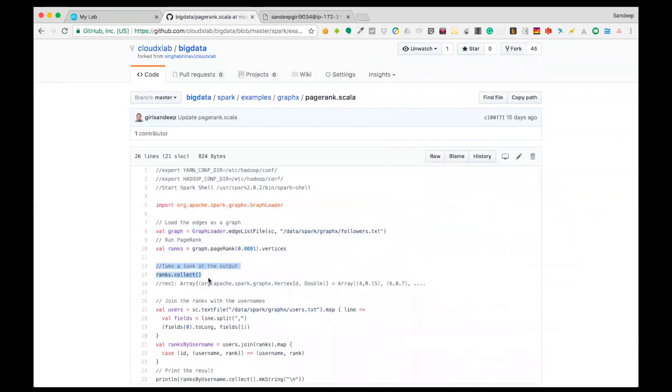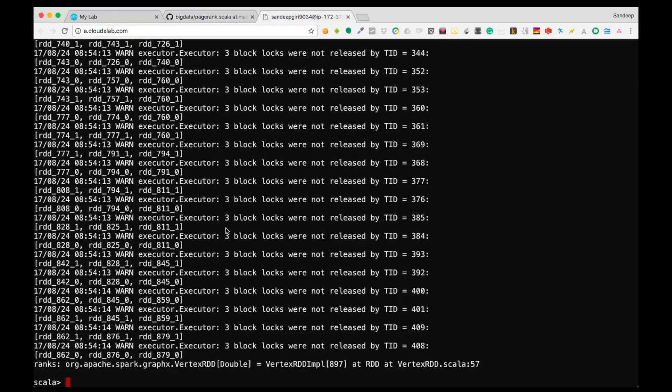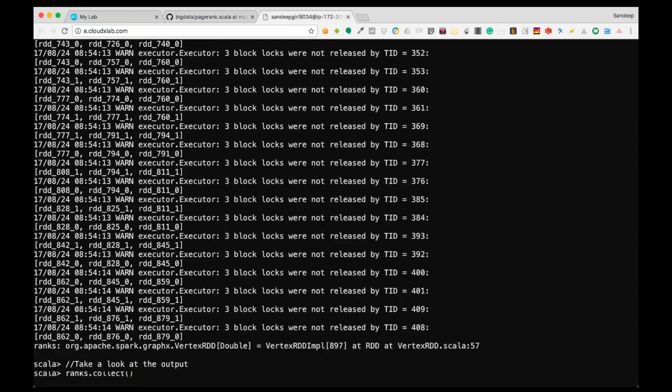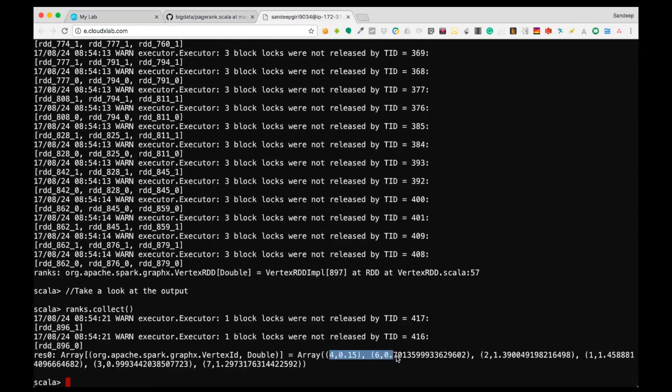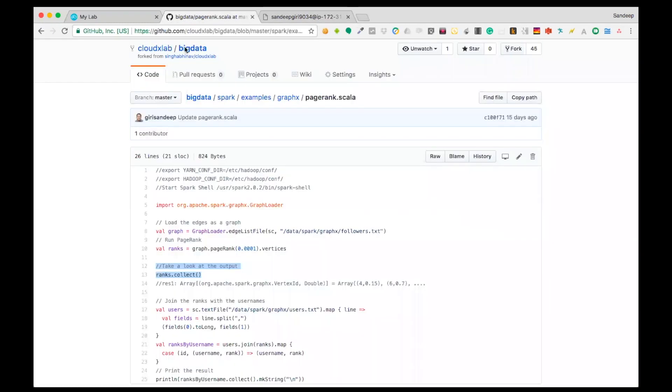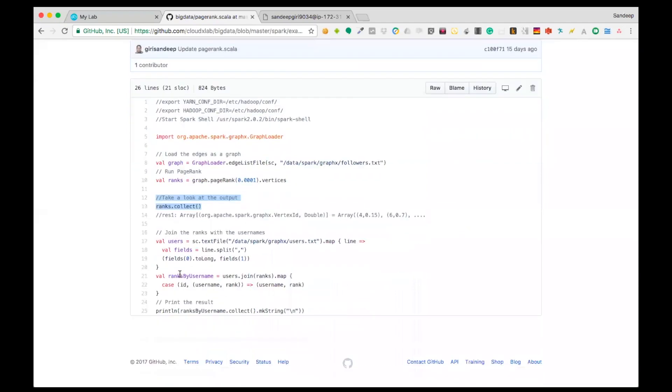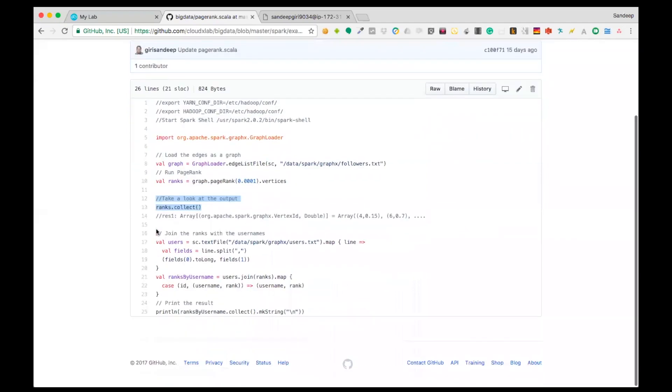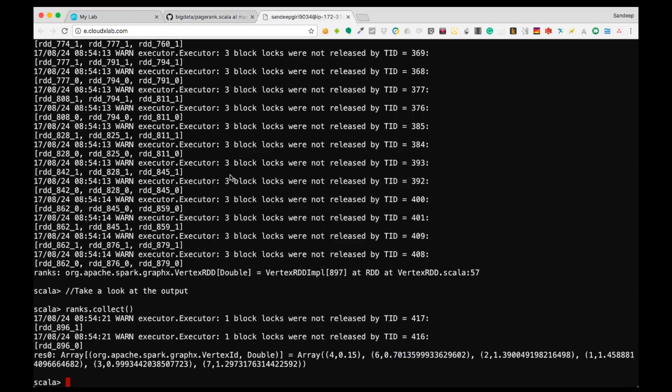To take a look at the result, let's collect the ranks object. You can see that each vertex ID has a rank. We can further replace the ID with the name of the person. This can be easily achieved by joining the IDs and the users. Let us create the RDD of users text file followed by the map transformation.